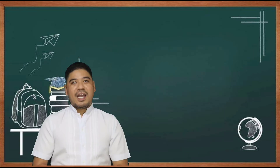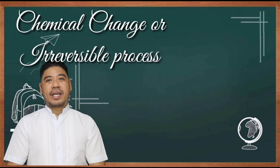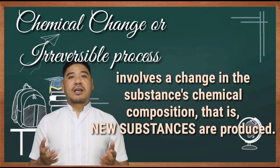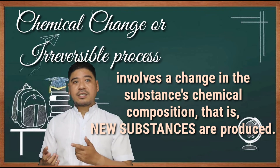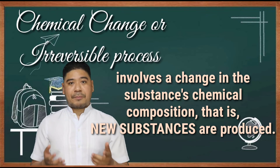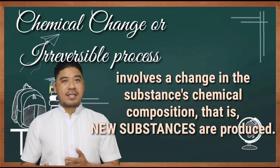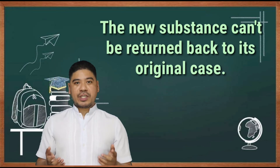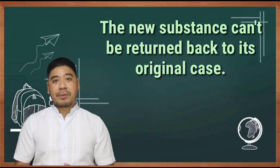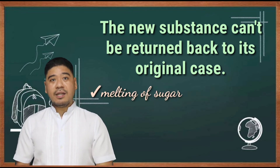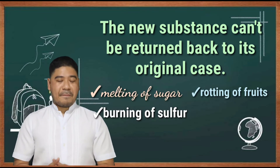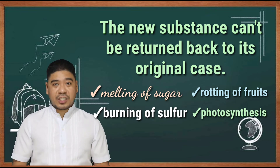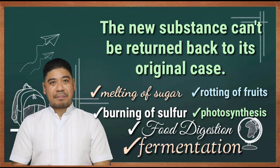Chemical change, or irreversible process, involves a change in the substance's chemical composition — that is, new substances are produced. This means that the new substance cannot be returned back to its original state. Examples are melting of sugar, rotting of fruits, burning of sulfur, the photosynthesis process, food digestion, and fermentation.